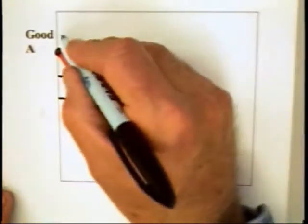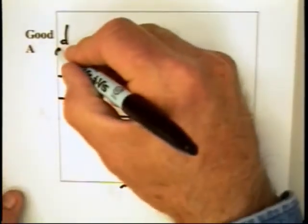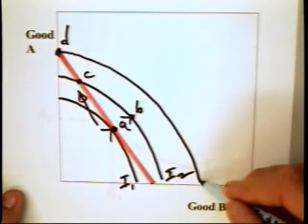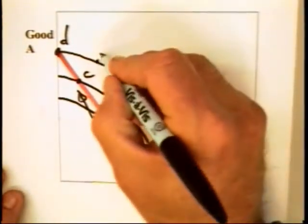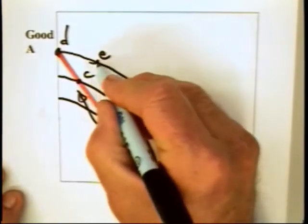You can take another combination, D, and we can run an indifference curve through that point. And we can conclude that E is preferred to C.